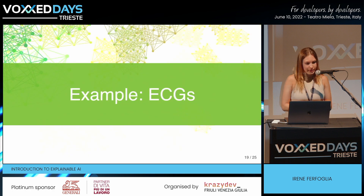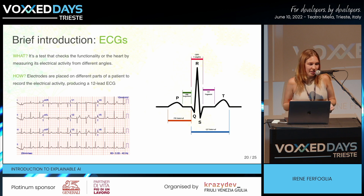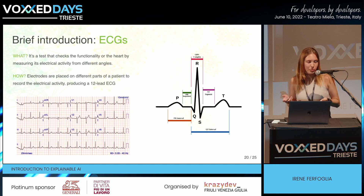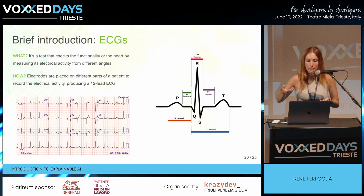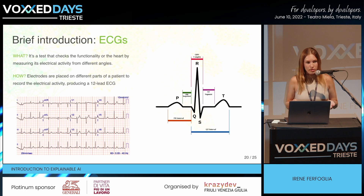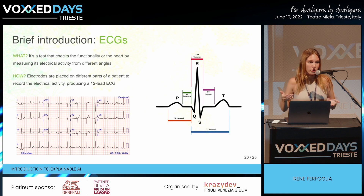We can now move on to the ECG example. First, a brief introduction: ECG or EKG stands for electrocardiogram, which is a test that tracks the functionality of the heart. This is done by measuring its electrical activity and placing a number of electrodes through the patient's body, which metaphorically cut the heart from 12 different points of view and measure its electrical activity, creating 12 of what are called leads. In each lead, we can identify some points, intervals, and segments, which we can analyze in order to assess the proper function of the heart. For example, a number of conditions modify the ST segment, and a short QRS complex assures proper function.